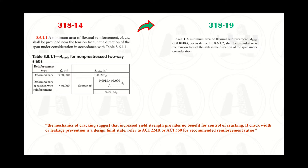The code argues that the mechanics of cracking suggest that increased yield strength provides no benefit for cracking control. If crack width or leakage prevention is a design limit state, you are referred to ACI 224R or ACI 350 for the recommended reinforcement ratios.